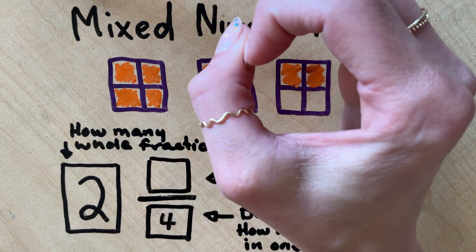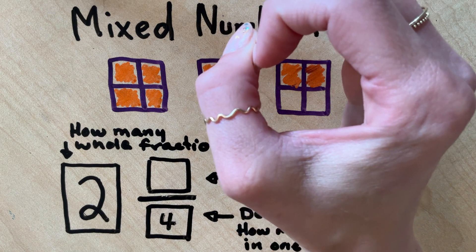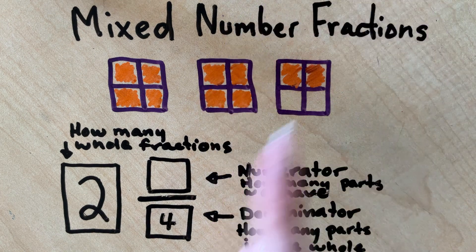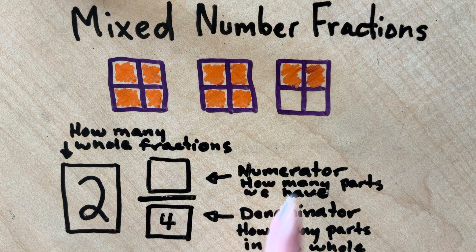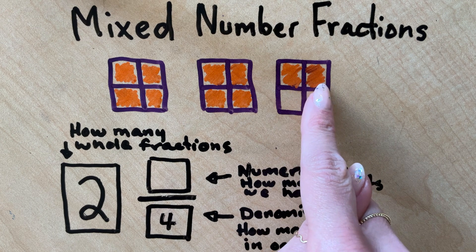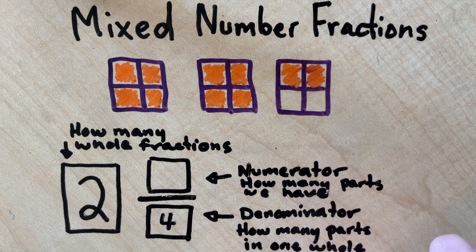I zoomed into just one fraction, figured out how many pieces were in the whole of that one fraction, and then I put it down as my denominator. The next thing I need to do is count how many pieces do I actually have. This is kind of like a remainder in division.